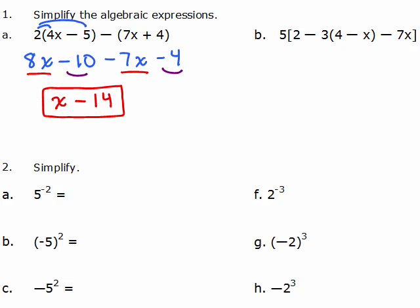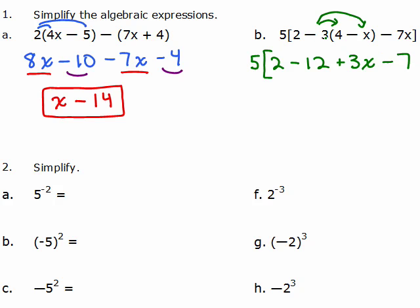For number 2, we have to work within these brackets first. I write the 5 and the brackets, and I'm going to do my distributive property here, distributing a negative 3 to each of the terms inside. So negative 3 times 4 is negative 12, and negative 3 times negative x will be plus 3x. The minus sign here is not being distributed over the terms outside the parentheses — it's only over what's in the parentheses.